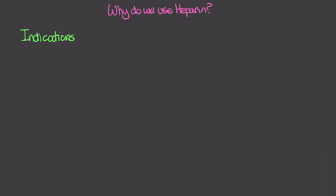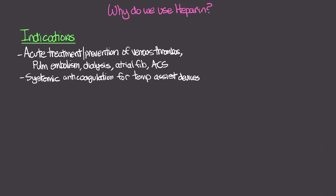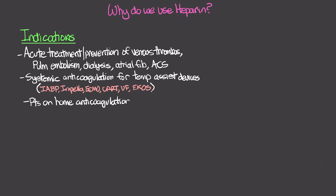Some indications for heparin include the acute treatment and/or prevention of venous thrombosis and pulmonary embolism, preventing clotting of blood samples in dialysis, atrial fibrillation, and acute coronary syndrome. It is also used for systemic anticoagulation with temporary assist devices such as balloon pumps, Impellas, ECMO, CRRT, ultrafiltration, and ECOS. It can also be given directly in cases like the Impella pump to prevent thrombosis of the pump itself.